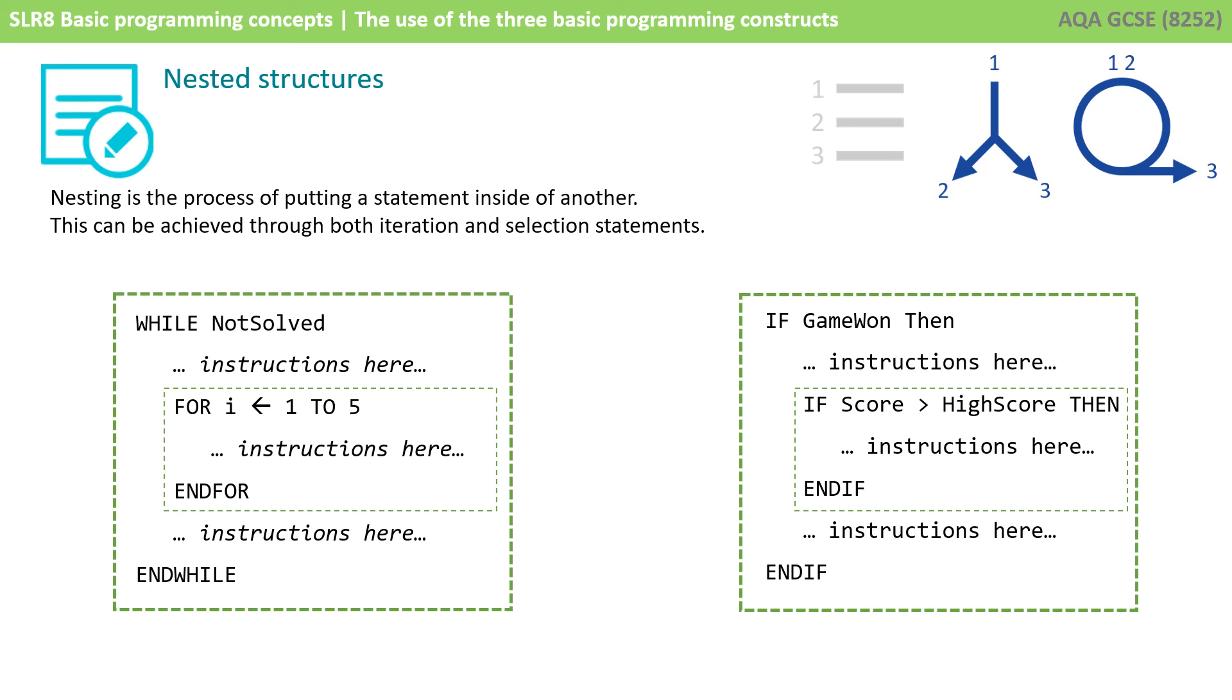There's also nothing stopping you nesting selection and iterative statements within each other and indeed to multiple levels. But a simple two level nested structure is all you need to be aware of for the GCSE. Thank you.